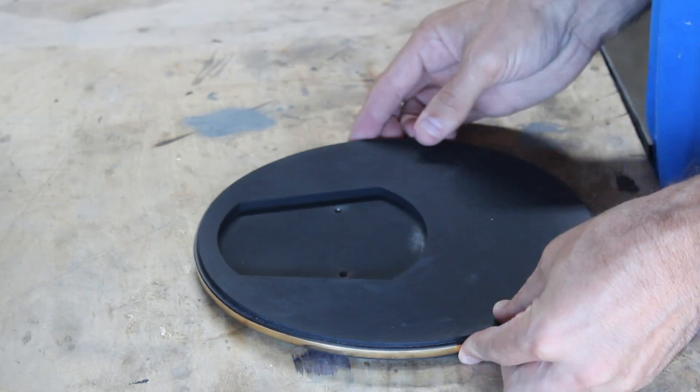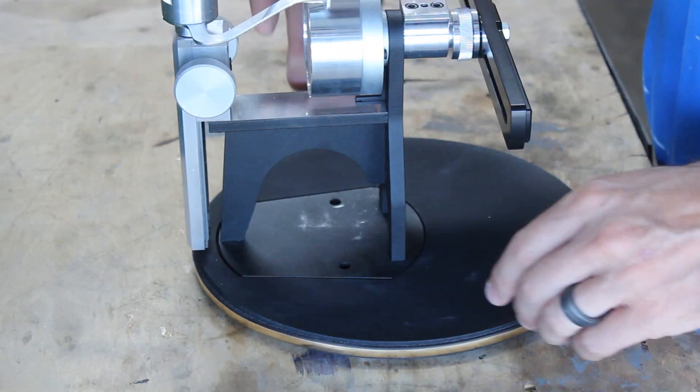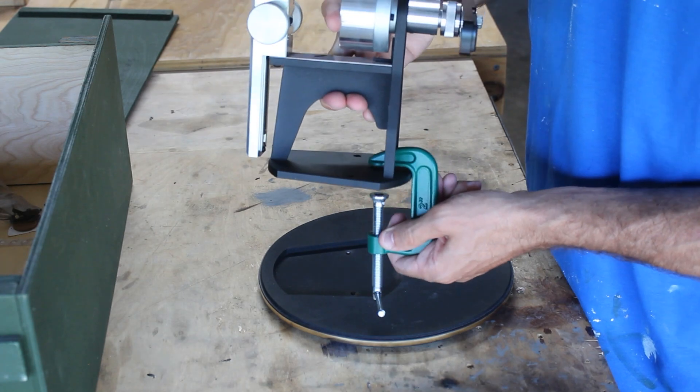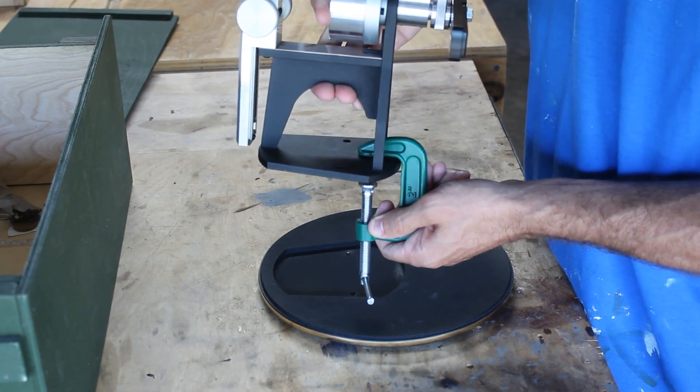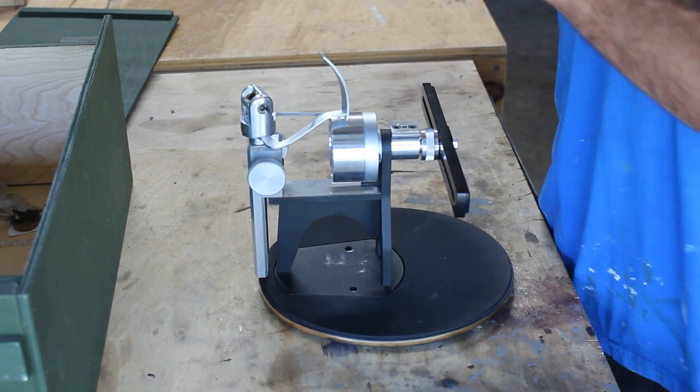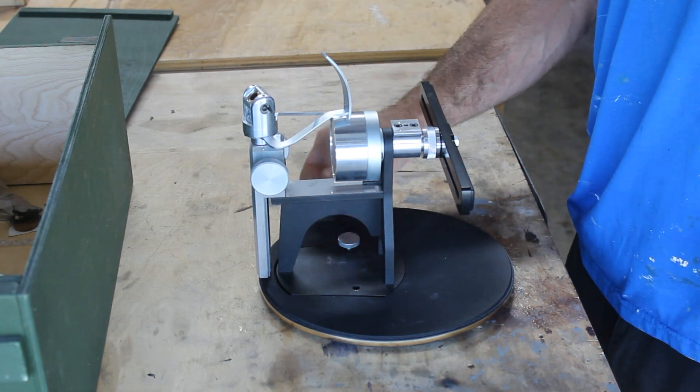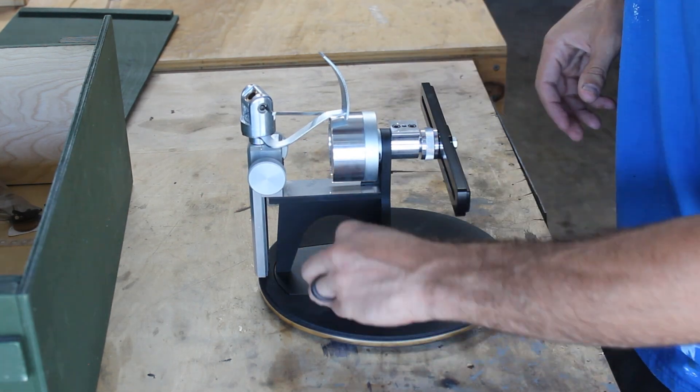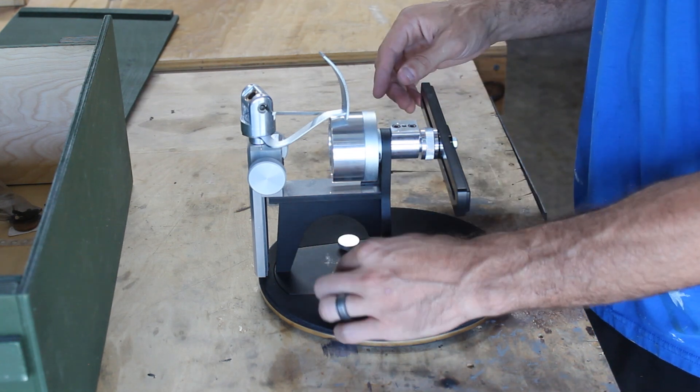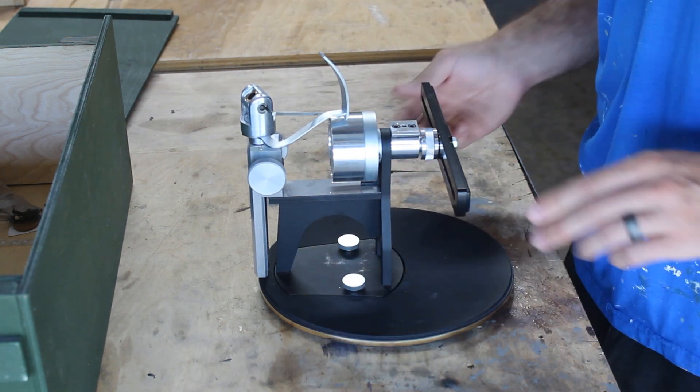It basically comes with a nice weighted base that you can attach the mechanism to. If you want to keep it more lightweight, it has the ability to just clamp to tables, but I decided to attach it to the base. And I think if you attach it to the base, you really won't need to clamp it down because it has a nice amount of weight to it.